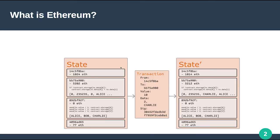Before we plunge into the details of the paper, I would like to introduce some basic concepts regarding Ethereum and smart contracts for those not too familiar with this area. Essentially, Ethereum is a decentralized blockchain platform that establishes a peer-to-peer network that securely executes and verifies application code, which is called smart contracts. Smart contracts allow participants of a blockchain network to transact with each other without a trusted centralized authority.